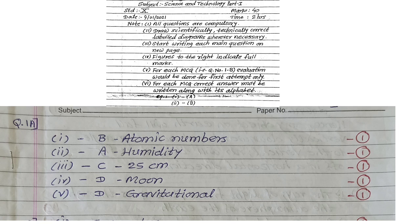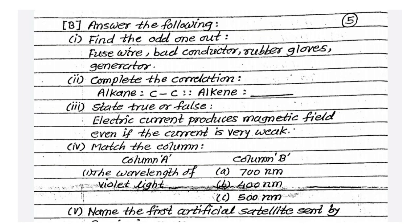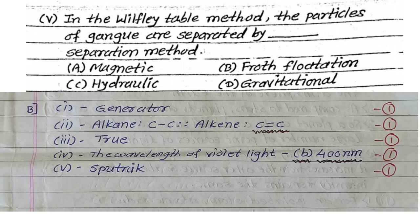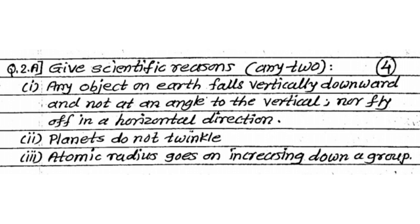Now we are continuing question number first B. Answer the following. Any type of objective asked here like find the odd man out, true or false, correlation, etc. Write the option number and correct answer as per the objective given. Like first one, find the odd man out, answer is generator. Second one is alkene carbon-carbon single bond, alkene carbon-carbon double bond. Third one, state true or false, so write the answer only true. In this way, you write all 5 answers of question first B.